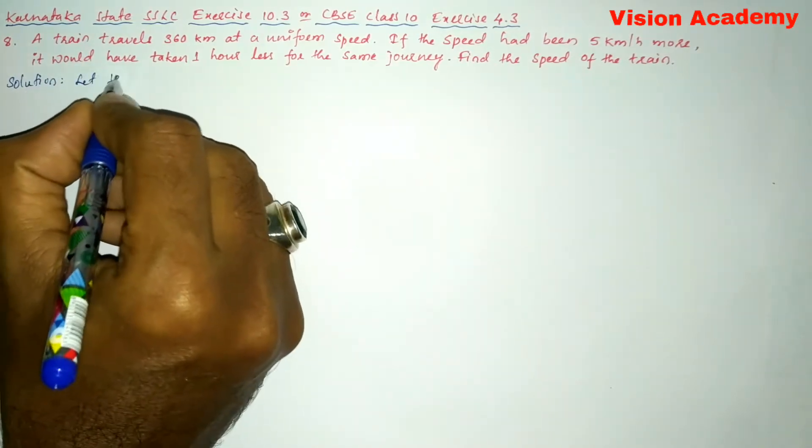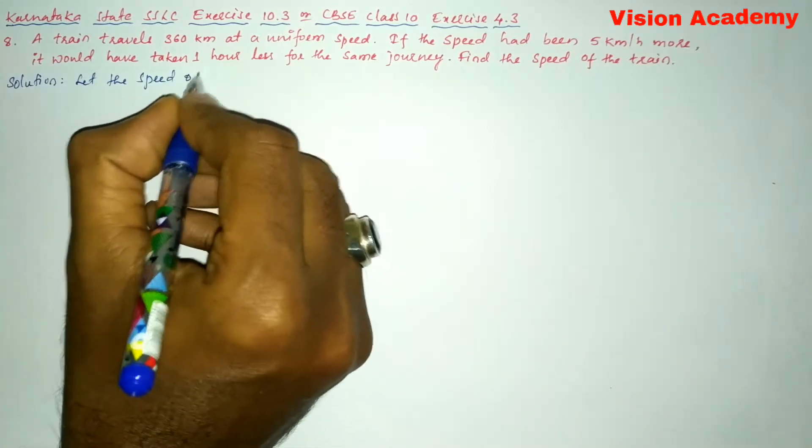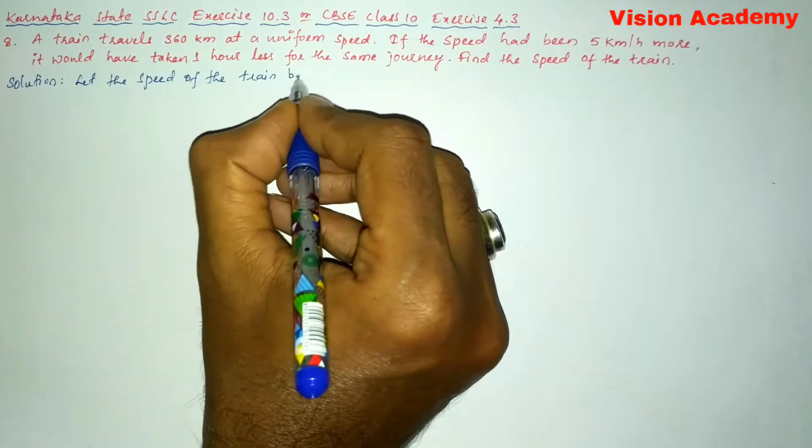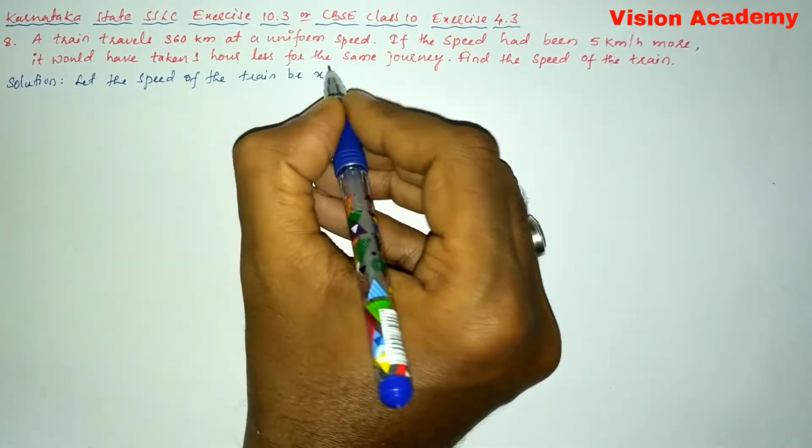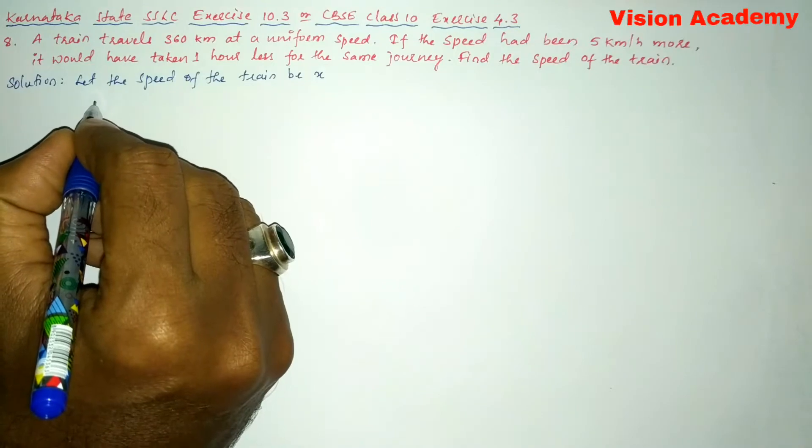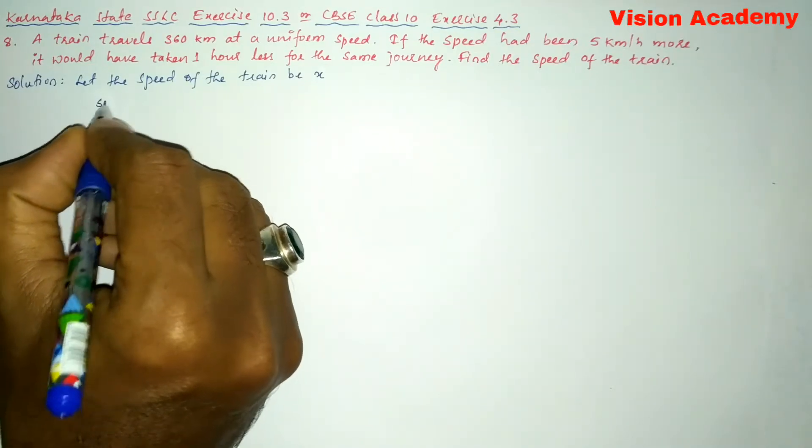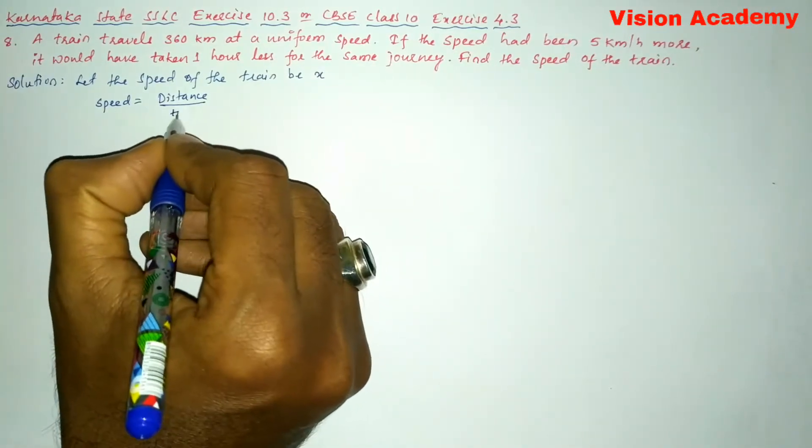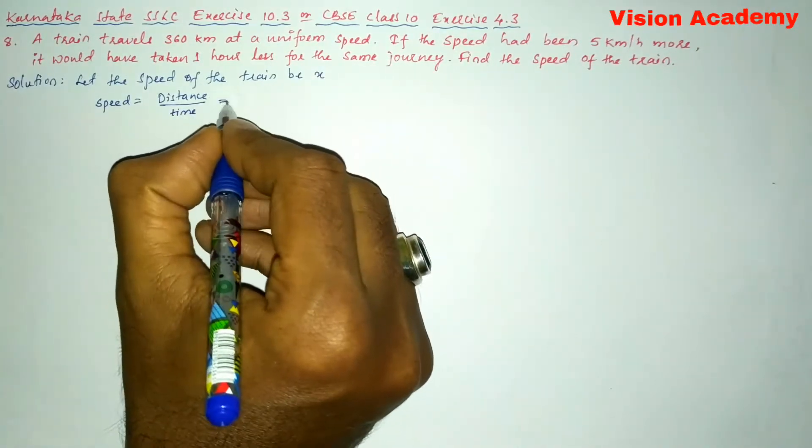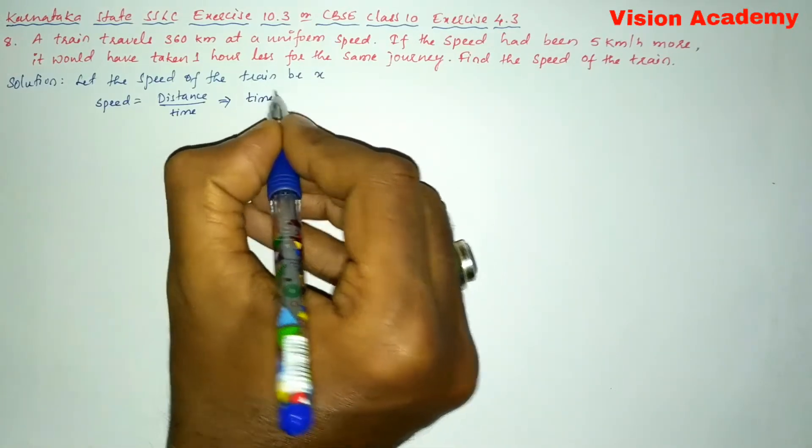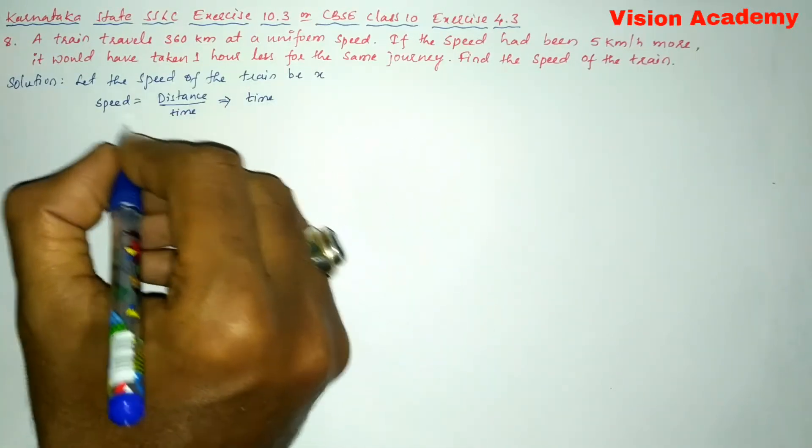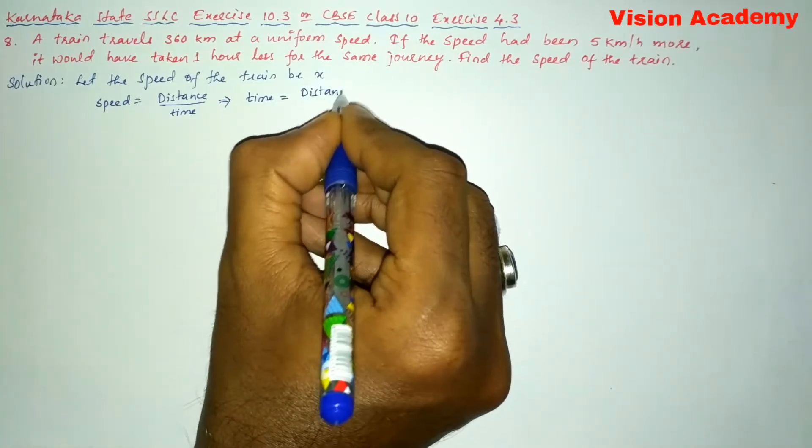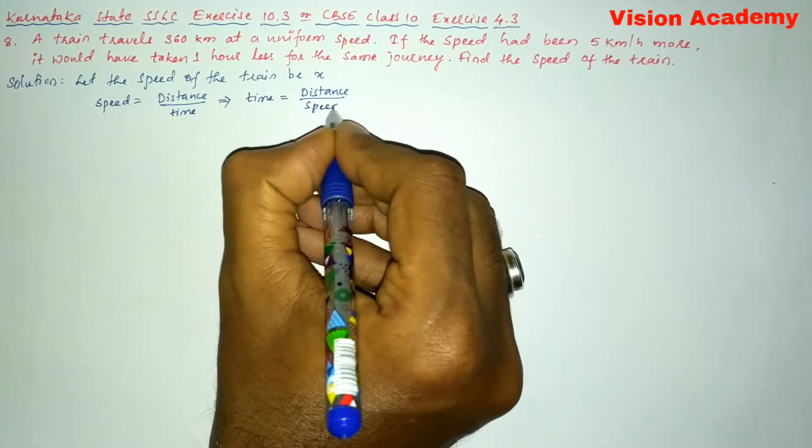Let the speed of the train be x. Here we know the formula of calculating speed is equal to distance divided by time. And if you want to find out time, then we will transform this time from RHS to LHS and the speed will come from LHS to RHS. So time is equal to distance divided by speed.